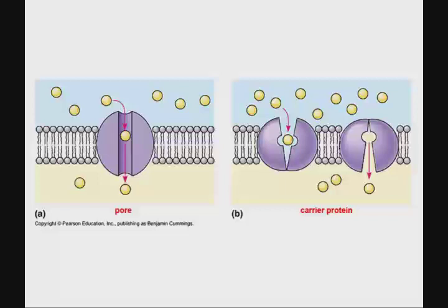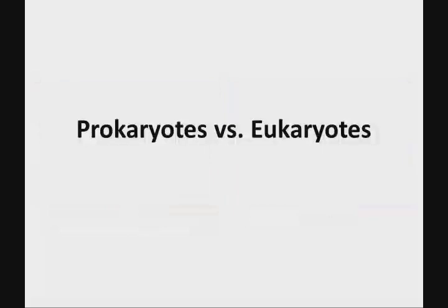Those proteins are going to be involved in moving stuff across the membrane, and we'll talk about that more later. This is one very fundamental aspect to all cells. As we talk about cells, we can break them down into two major groups — prokaryotes and eukaryotes. Most of the things familiar to you on a macro scale are eukaryotes or organisms made of eukaryotic cells.